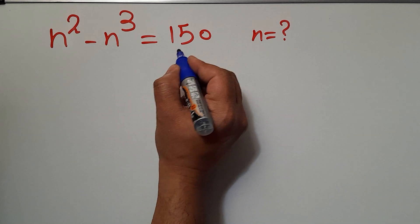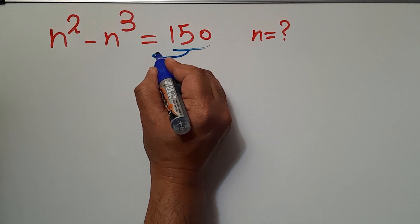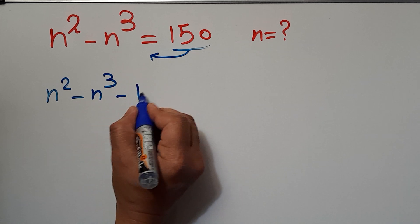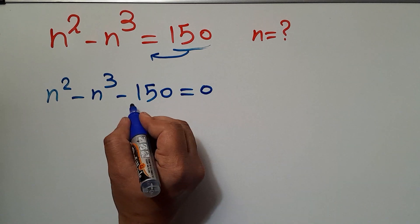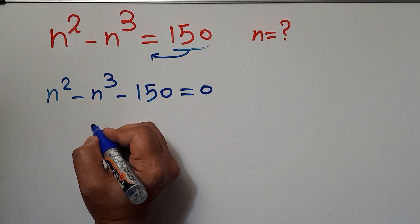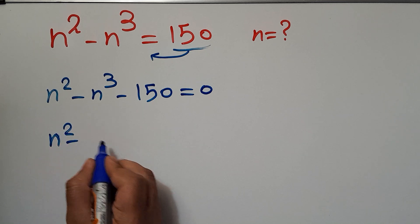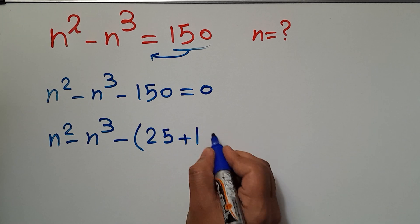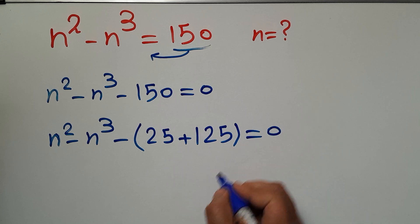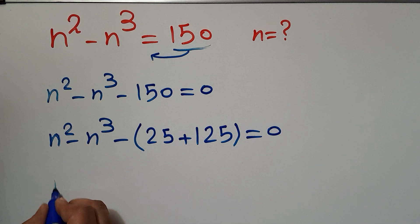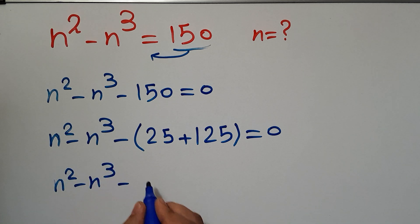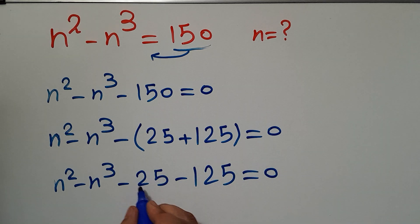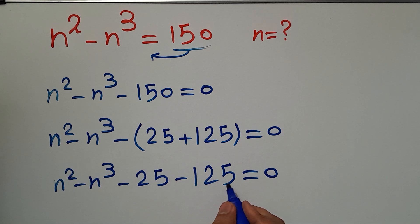Our first step is to move 150 to the left-hand side, so we have n squared minus n cubed minus 150 equals 0. Now let's split this 150 according to the two exponents: n squared minus n cubed minus bracket 25 plus 125 bracket equals 0. Taking the negative inside the bracket gives us n squared minus n cubed minus 25 minus 125 equals 0.